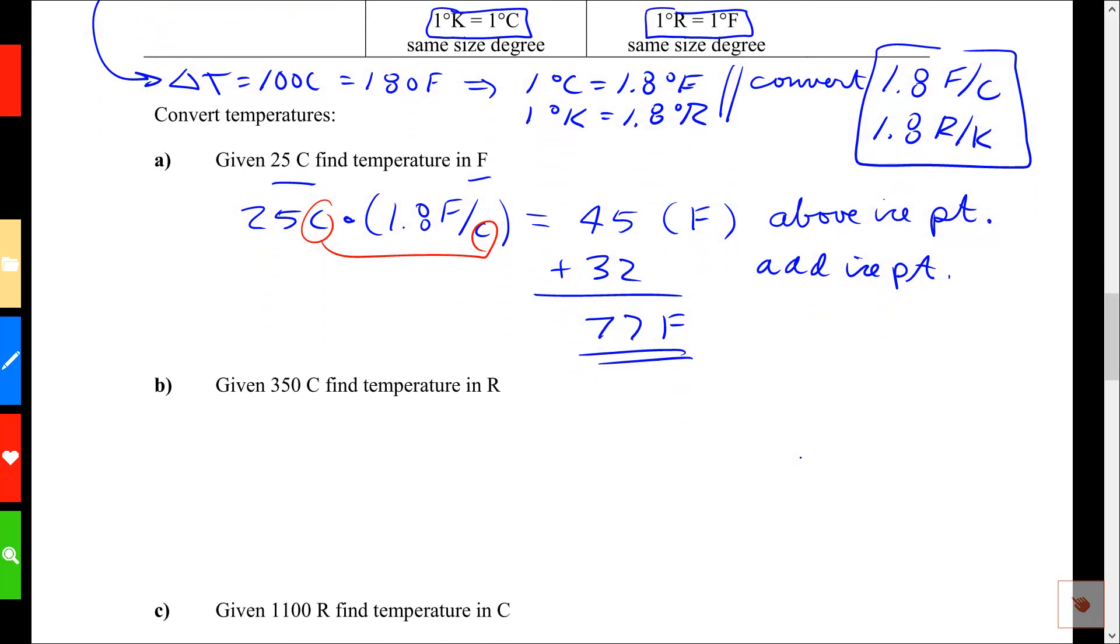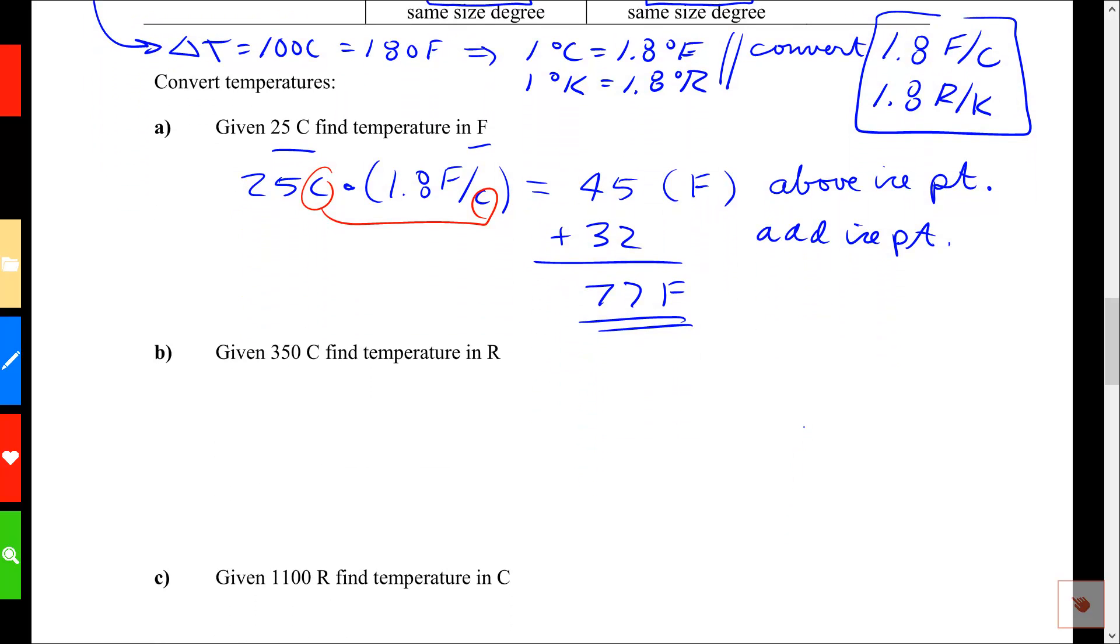Example B. Given 350°C, find the temperature in R. Well, R is an absolute temperature scale. Let's start the same way. I'm going to say 350°C, multiplied by a conversion factor, 1.8 Fahrenheit per C.